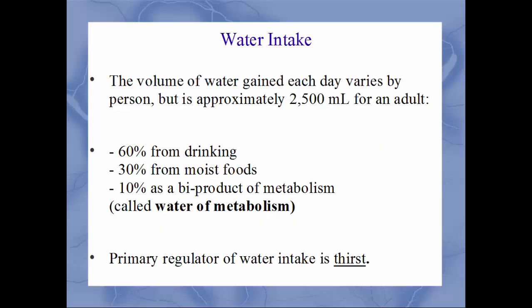Water intake varies by person and activity but is roughly 2.5 liters (2500 mL) for an adult. About 60% comes from drinking beverages, 30% from moist foods like fruits, and the last 10% is the water of metabolism — water produced as a byproduct of metabolic chemical reactions. The primary regulator of water intake is thirst.